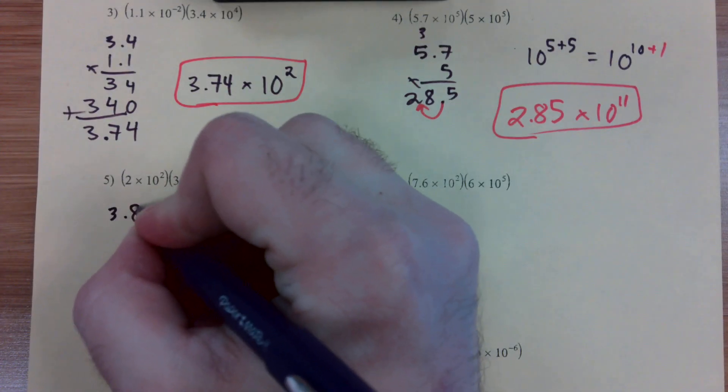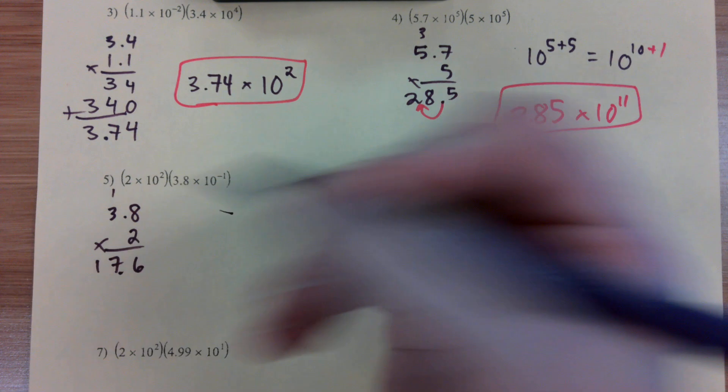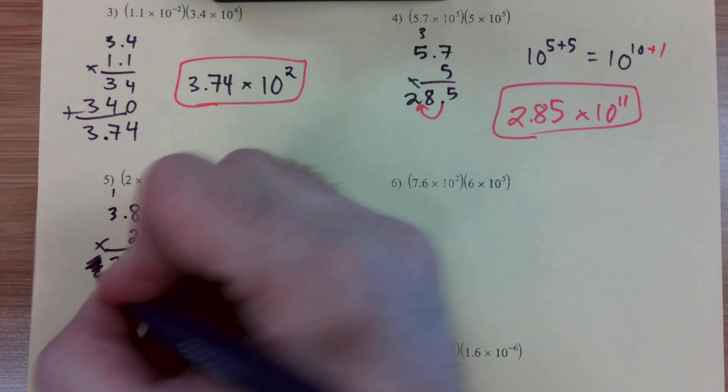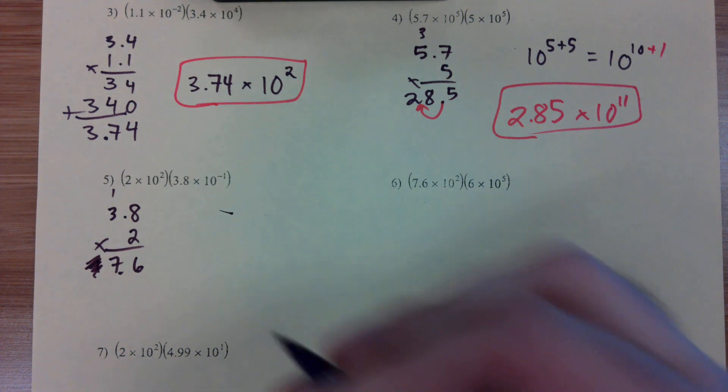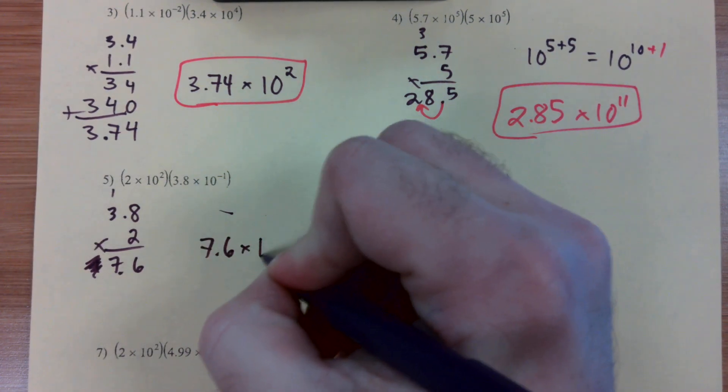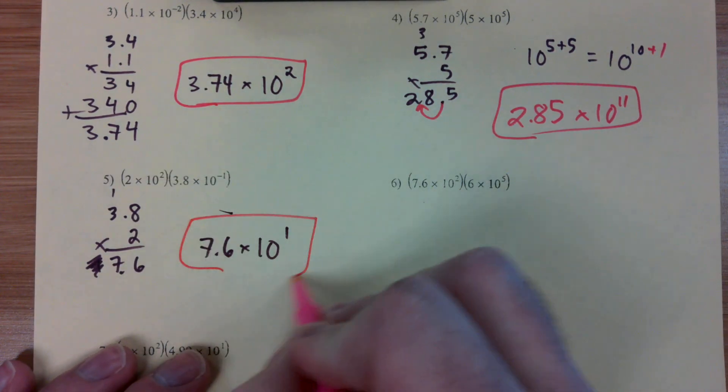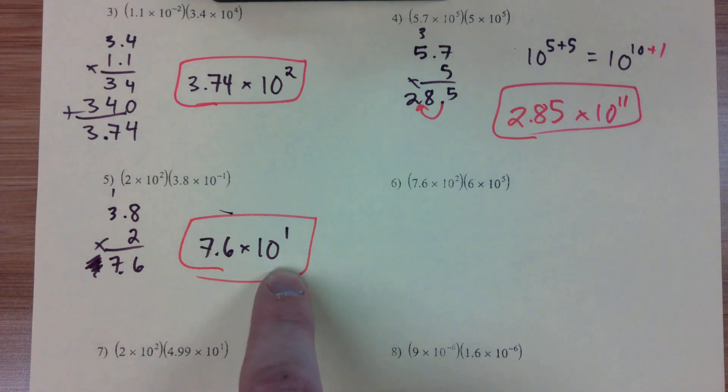Number five, 3.8 times 2. 16, 17. That's not right, not 17, just 7. 7.6 is what we get. And then 2 minus 1 just gives us to the first. Again with scientific notation, I know usually we don't write our 1s as an exponent, but please do in scientific notation, just because that's the way that it's written.